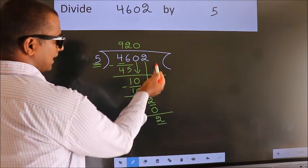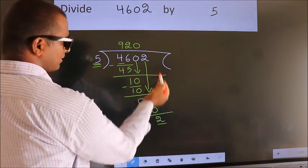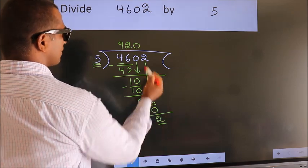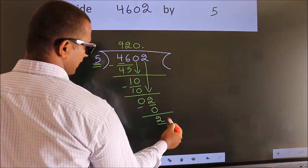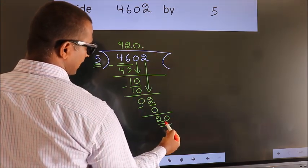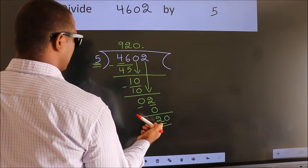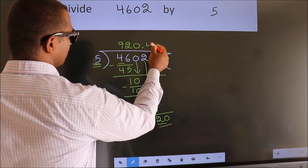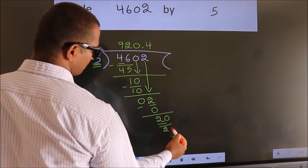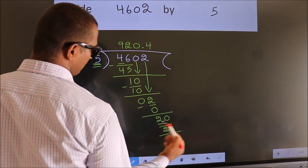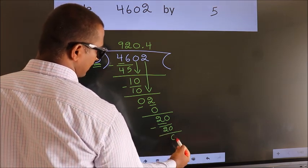And we did not bring any number down. So, now we can put dot, take 0. So, 20. When do we get 20? In 5 table, 5 fours, 20. Now, we subtract. We get 0.